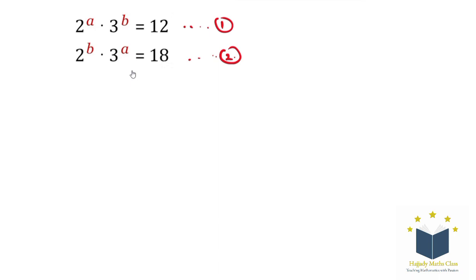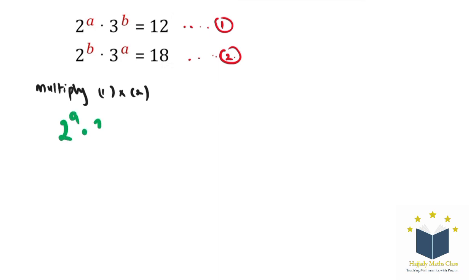So the first step is to multiply equation 1 and 2. So we multiply equation 1 by equation 2. For us to do that, we have that 2 to the power of A multiplied by 2 to the power of B, multiplied by 3 to the power of A, multiplied by 3 to the power of B. This equals 12 multiplied by 18.